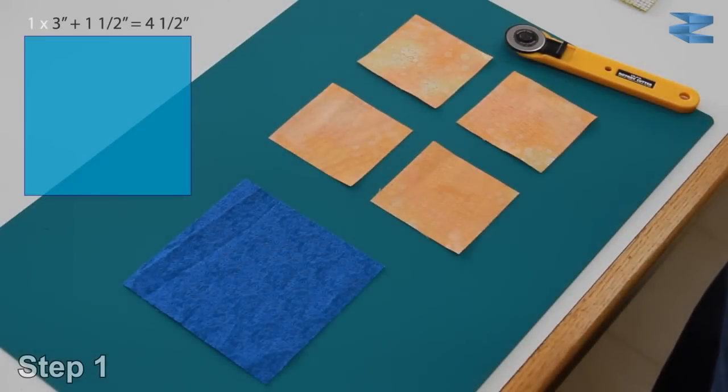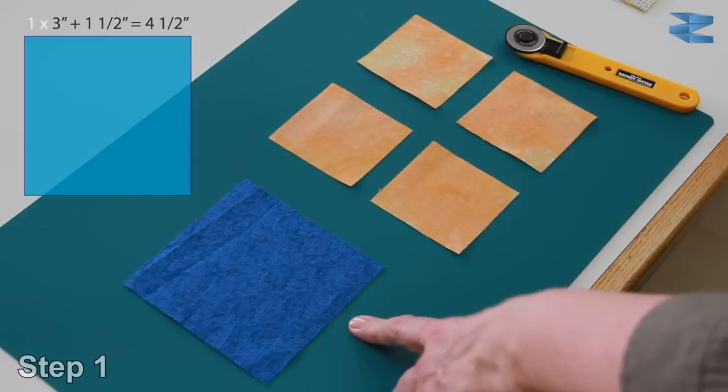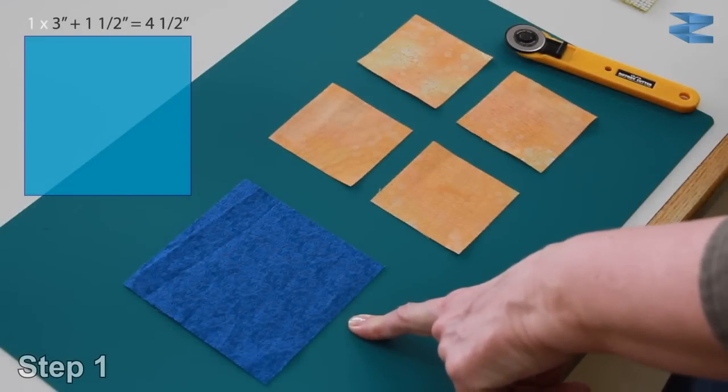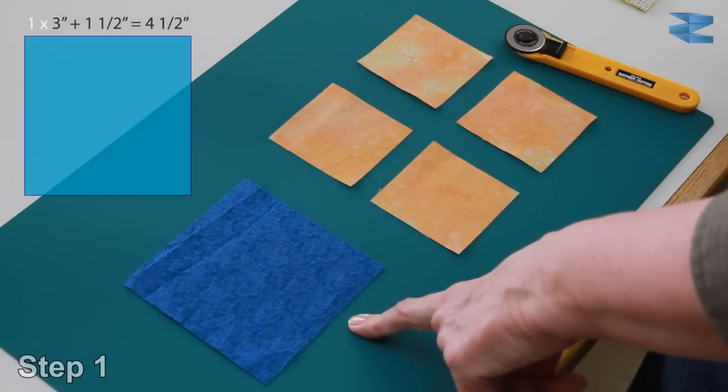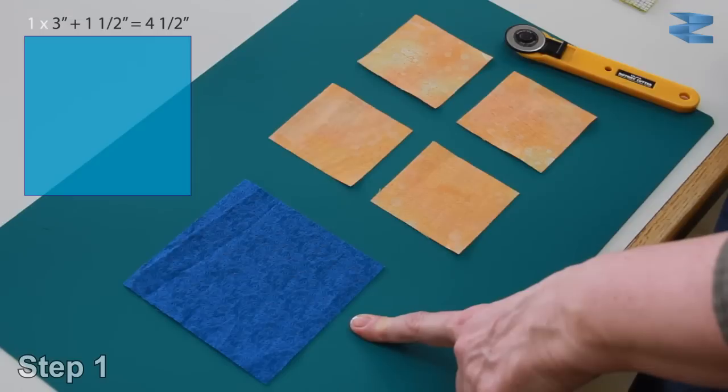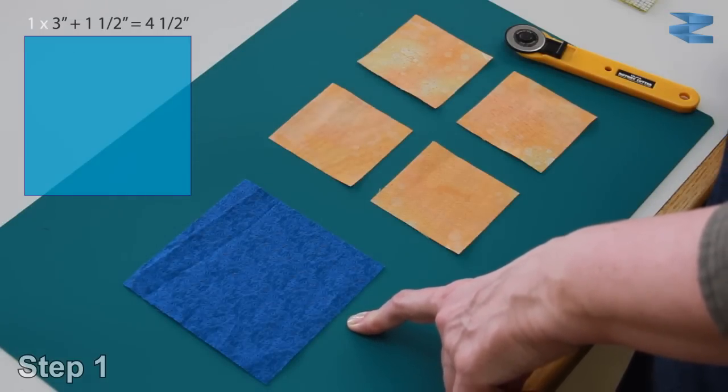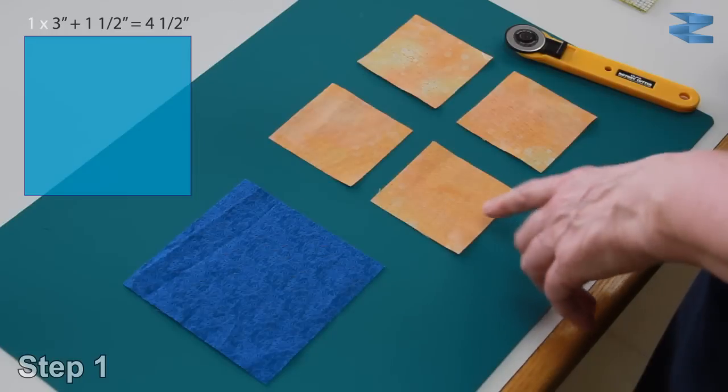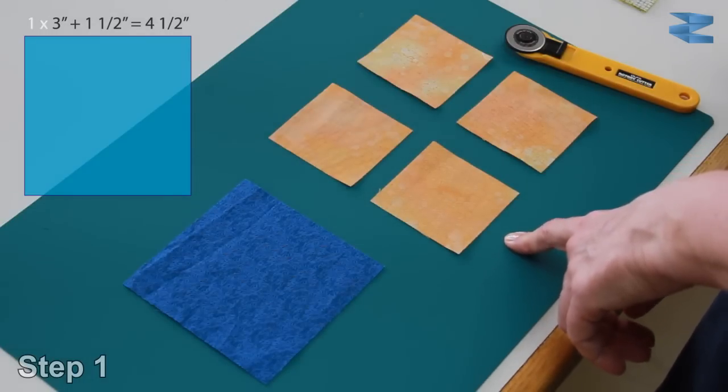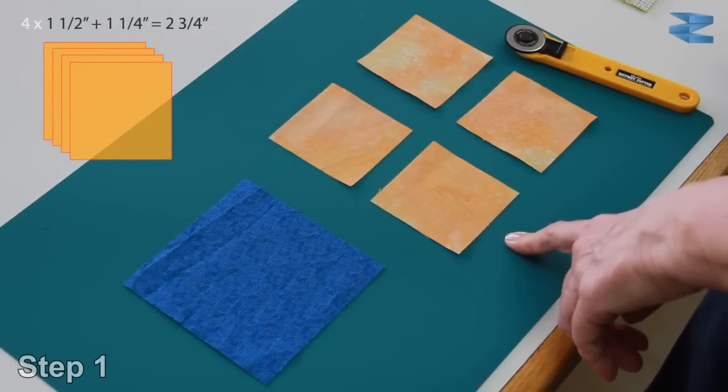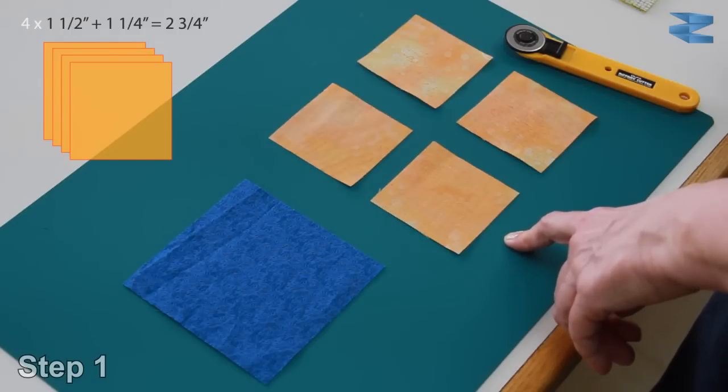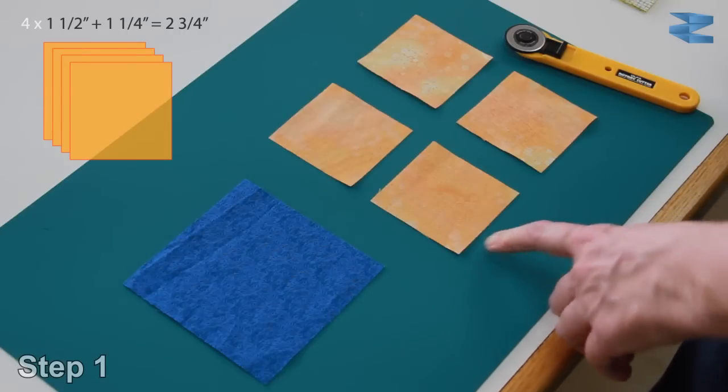To make these flying geese, first you need one large square that is cut 1.5 inches larger than the finished width. So this square has been cut 4.5 inches square, which is 3 inches plus 1.5 inches. Then you need the 4 small squares that are cut 1.25 inches larger than the finished height. These orange squares are cut 2.75 inches each, which is the 1.5 finished plus the 1.25.